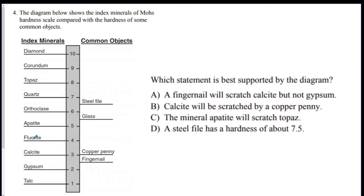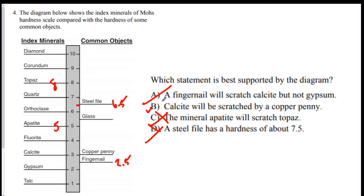Number four: the diagram shows the index minerals of the Mohs hardness scale compared with some common objects. Which statement is best supported? A fingernail is 2.5, so it won't scratch calcite, which is 3 — that's out. Calcite will be scratched by a copper penny — yes, the penny is harder than calcite, so B is correct. Apatite is a 5 and topaz is an 8, so apatite will not scratch topaz. And D says a steel file has a hardness of about 7.5, but it's actually 6.5. So B is the only good answer.